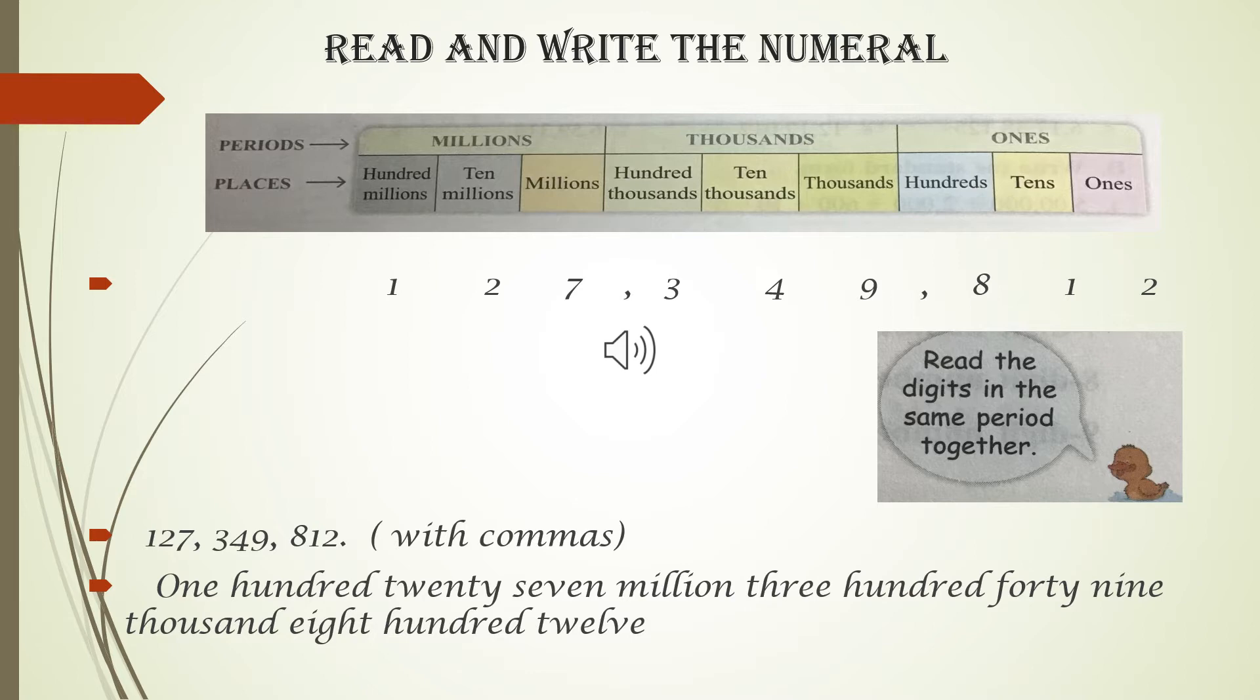We begin from right and insert a comma after every three digits. That is, we divide the numbers into its periods. Then, read each period separately. For example,